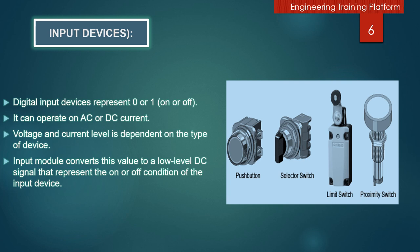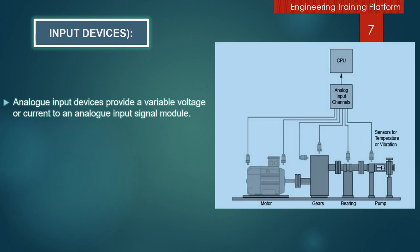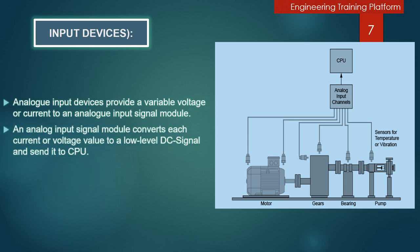An input device's values are stored in the CPU. Analog input devices provide a variable voltage or current to an analog input signal module. An analog input signal module converts each current or voltage value to a low-level DC signal and sends it to the CPU.